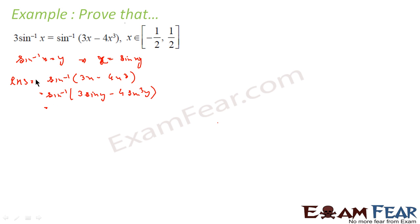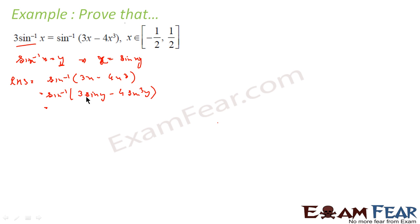Now we are stuck. The RHS is sin⁻¹(3 sin y − 4 sin³y) and the LHS is 3 sin⁻¹x, which is 3y. So if we can prove that the expression inside sin⁻¹ equals sin 3y, then sin⁻¹(sin 3y) becomes 3y, which matches our LHS. So we have to prove this is sin 3y.